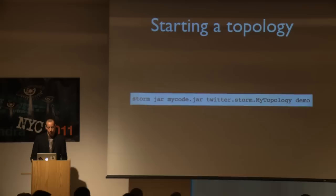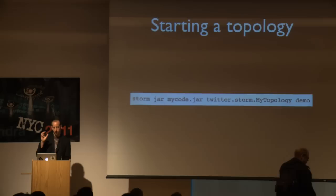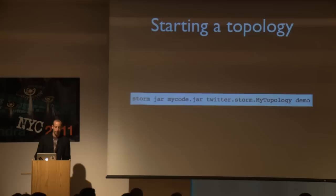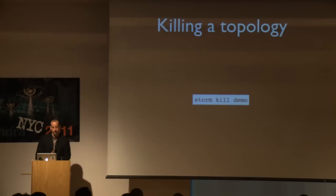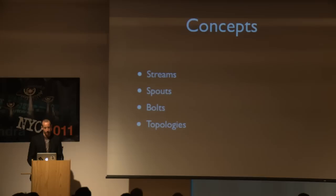To start a topology you want to run, at the command line you use the Storm client. You say 'storm jar', give it the jar containing your code, then tell it the class to run that defines your topology and the arguments to that class. If you later want to kill the topology, you say 'storm kill' and then the name of the topology. There are four main abstractions in Storm: streams, spouts, bolts, and topologies.